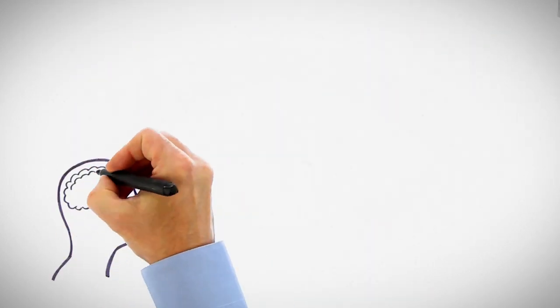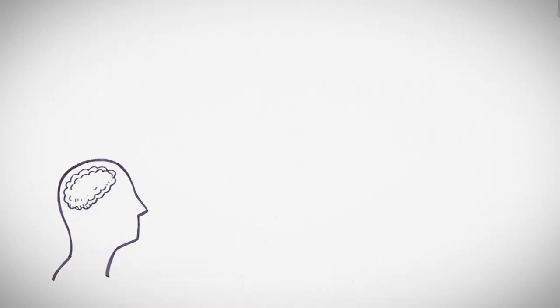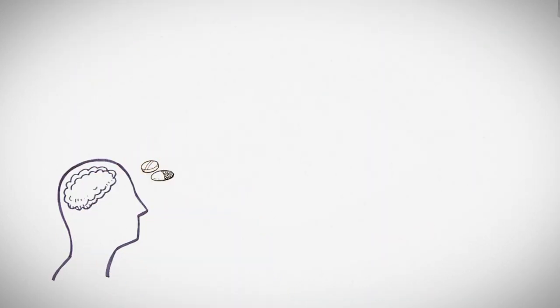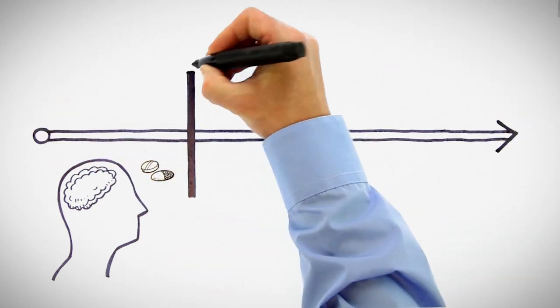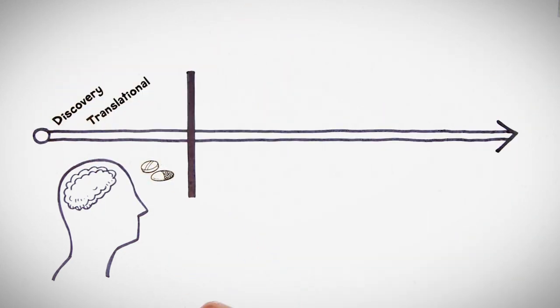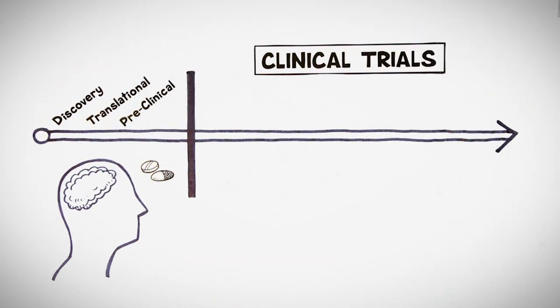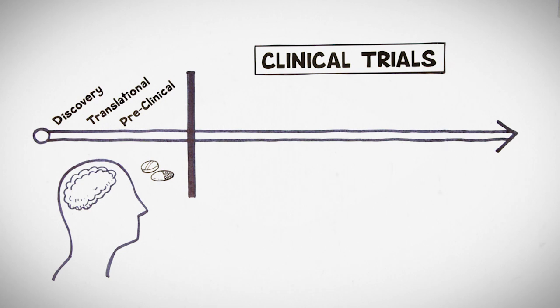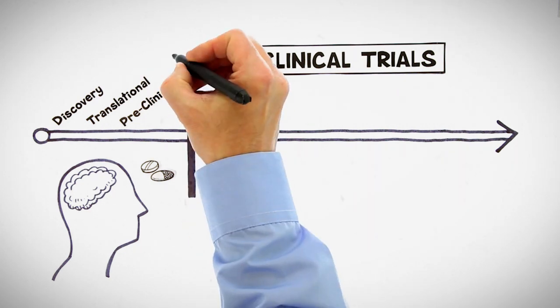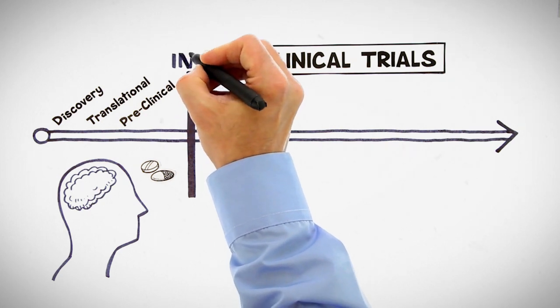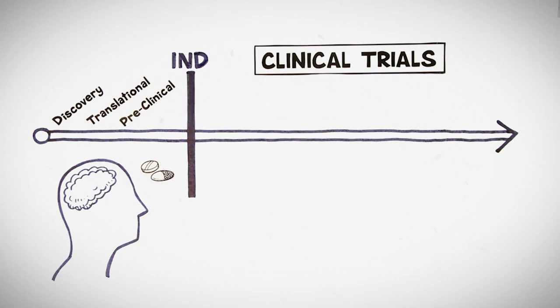Let's say we're a drug company with a new drug that may cure Alzheimer's. To evaluate its rationale for use in humans, we have to try it in humans in what we call clinical trials. But before you try any new drug in humans, you first have to submit something called an Investigational New Drug Filing, or IND.